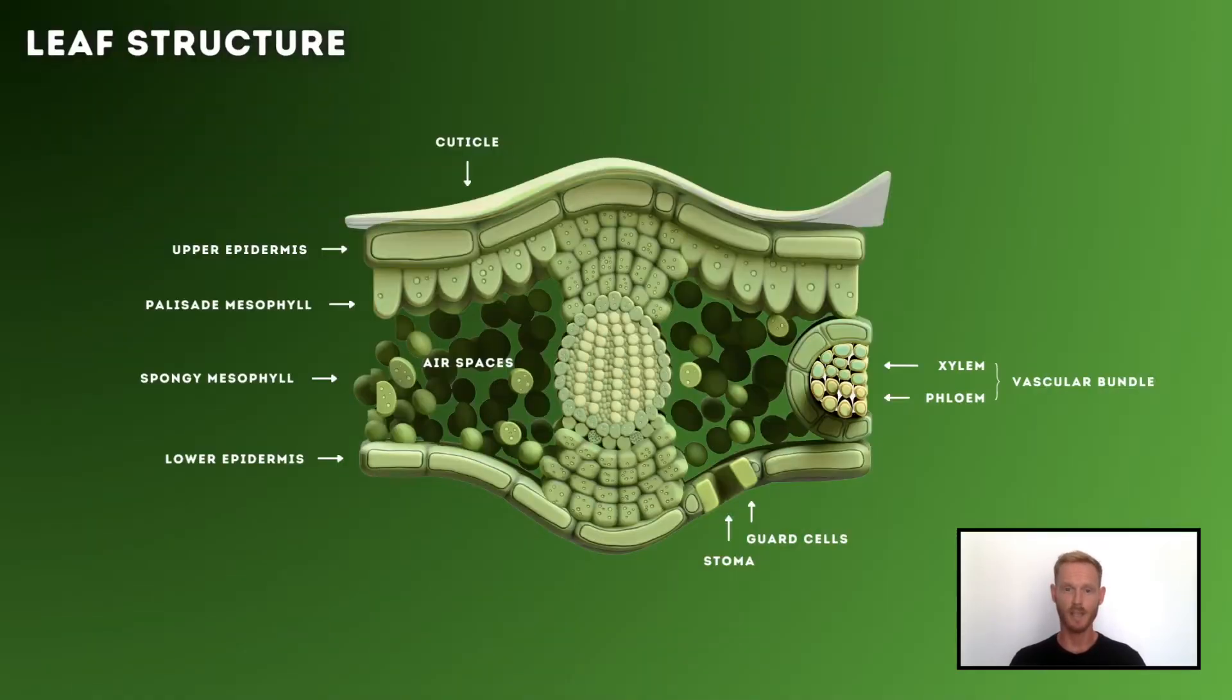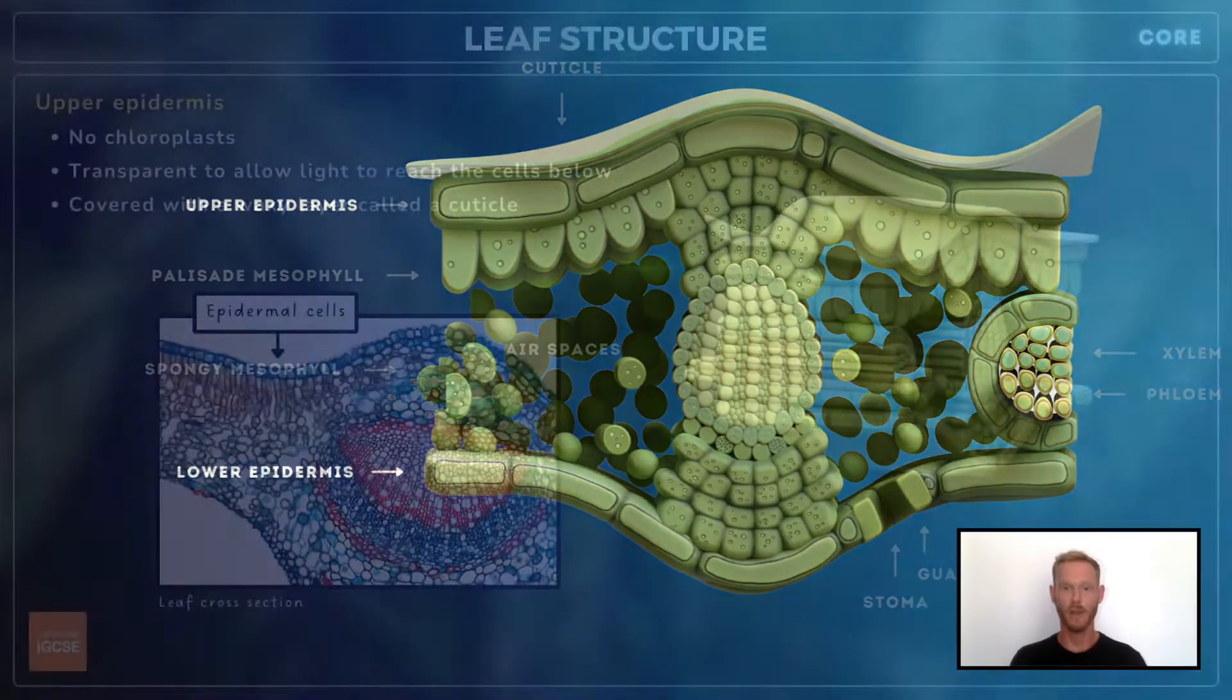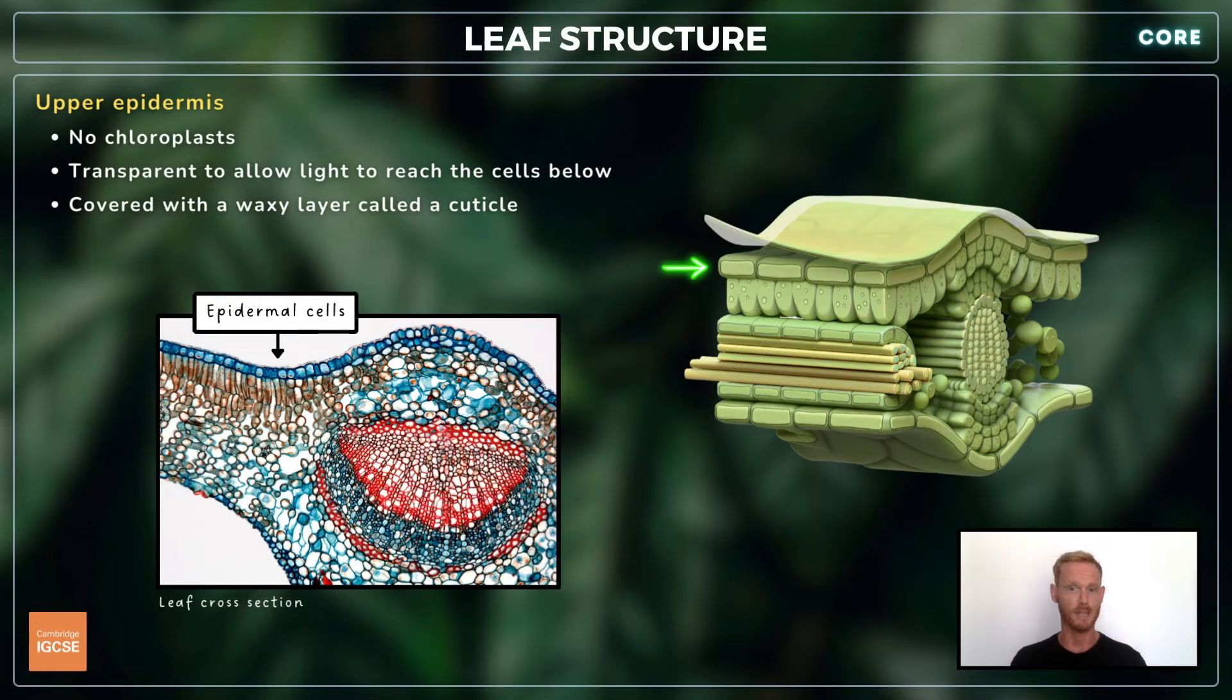Next you need to be able to identify the leaf structures of a dicotyledonous plant and explain how these structures adapt leaves for photosynthesis. So the epidermis is a single layer of cells that lines the upper and lower surfaces of the leaf. The upper cells do not contain chloroplasts and are transparent to allow light to reach the cells below.